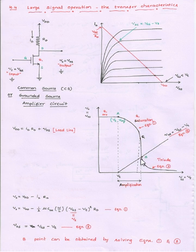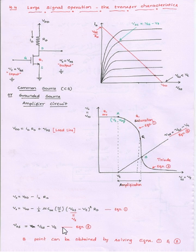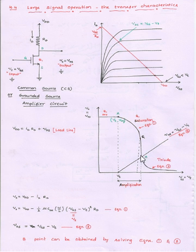We can obtain point B by solving Equation 1 together with the boundary that separates the saturation and triode regions, which is VDS = VGS − VT (Equation 2). Point B is obtained by substituting Equation 1 into Equation 2, so from Equations 1 and 2 we can solve and obtain point B.